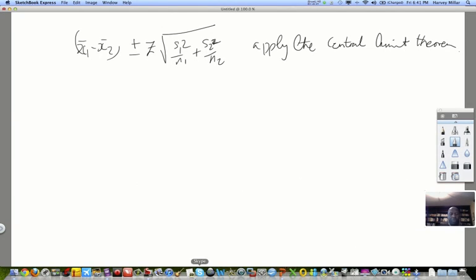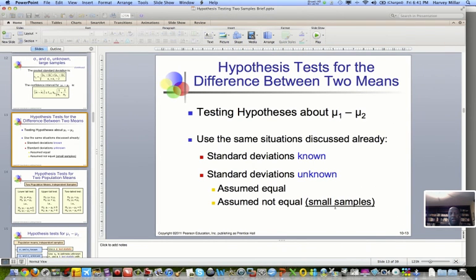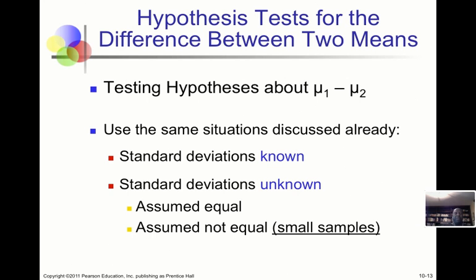Good, let's continue with hypothesis testing. Essentially, we apply the same concepts that we use for confidence intervals to hypothesis testing. All we're doing now is basically changing the steps. We use the same situations as discussed before: standard deviation is known versus unknown, if they're unknown they're assumed equal, and so forth.